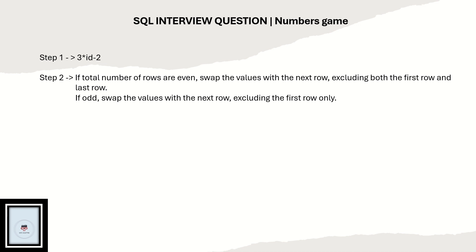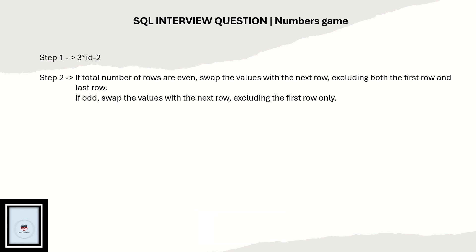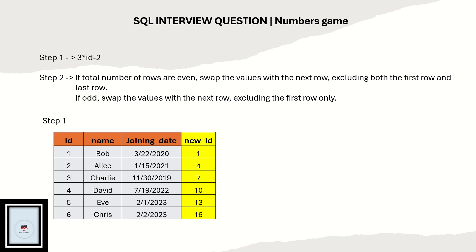If the total number of rows is odd, you need to swap values with the next row but exclude only the first row. So if the row count is five, row number 2 and row number 3 are swapped, and row number 4 and row number 5 are swapped. Let's understand this with the example.